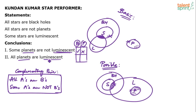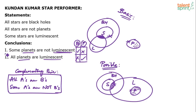Conclusion two — all planets are luminescent — fails the basic diagram but clears the possible diagram. So in the basic diagram, conclusion one is true and conclusion two is false; in the possible diagram, conclusion one is false and conclusion two is true. This is classic complementary pair behavior. Therefore, the final answer is: either conclusion one or conclusion two follows — this is an either-or case.